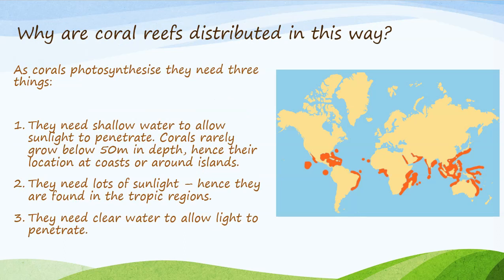Why are coral reefs distributed in this way? As corals photosynthesise, they need three things. One, they need shallow water to allow sunlight to penetrate — corals rarely grow below 50 metres in depth, hence their location at coasts or around islands. Two, they need lots of sunlight, hence they are found in the tropic regions. And three, they need clear water to allow light to penetrate.